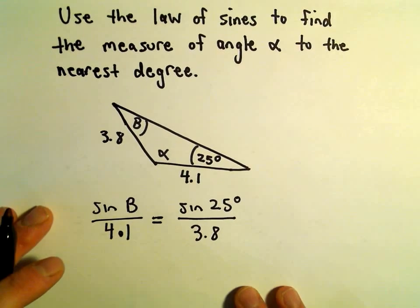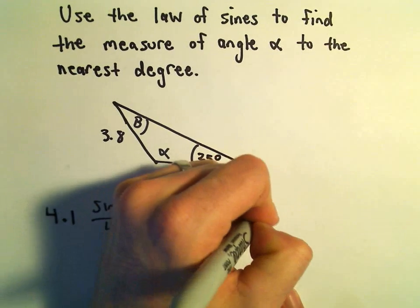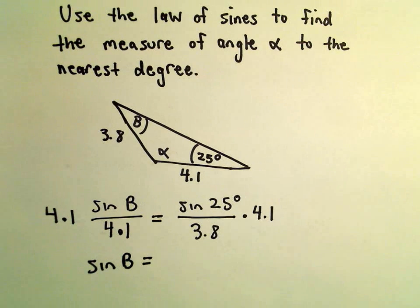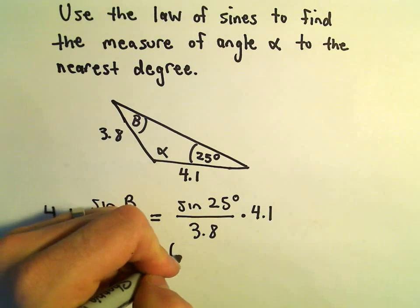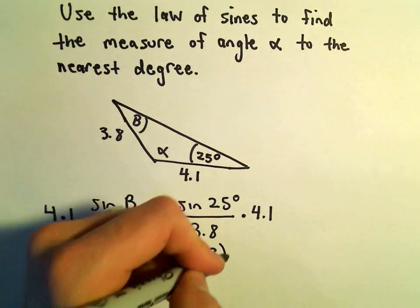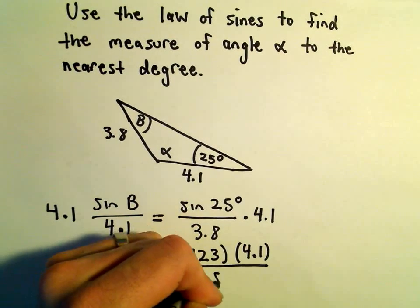And to solve for b, the first thing I'll do is just multiply both sides by 4.1. So, we'll get sine of b equals... We can start plugging this in a calculator. So, we've got sine of 25 degrees. I'm getting sine of 25 degrees to be 0.423 after rounding. So, I'm going to multiply that by 4.1, and then divide by 3.8.